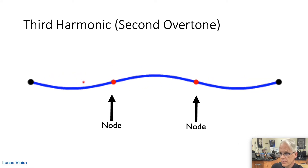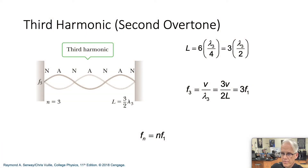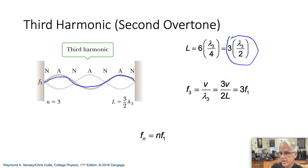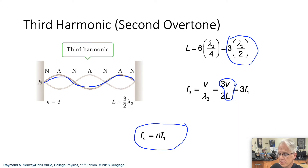Let's take a look at our third harmonic. Now we have two interior nodes and three antinodes. For our third harmonic, inside the length l, we have one full wavelength and a half — so three-halves of a wavelength. Therefore the length equals three-halves the wavelength. Plugging into the wave speed equation, the frequency is three times the fundamental frequency. So the third harmonic is three times f1.